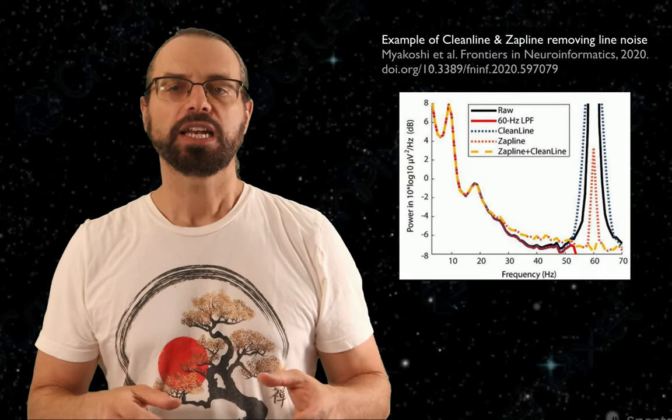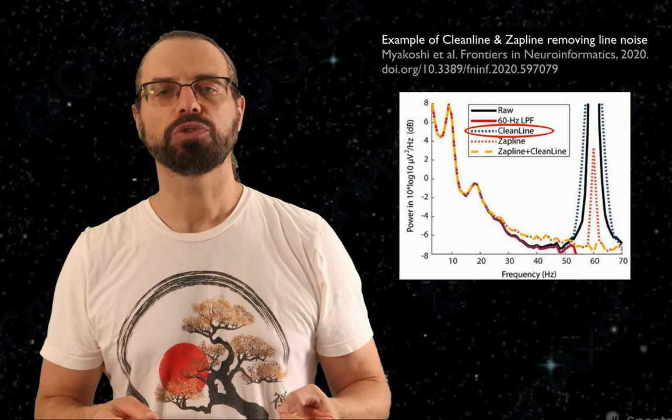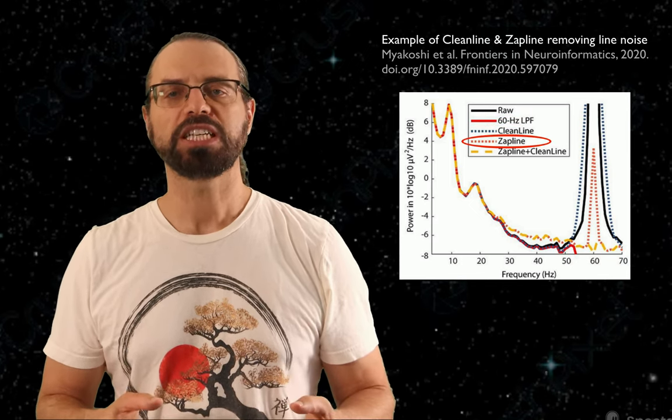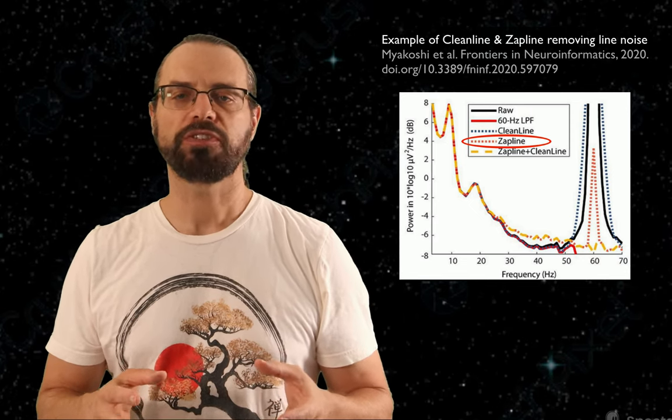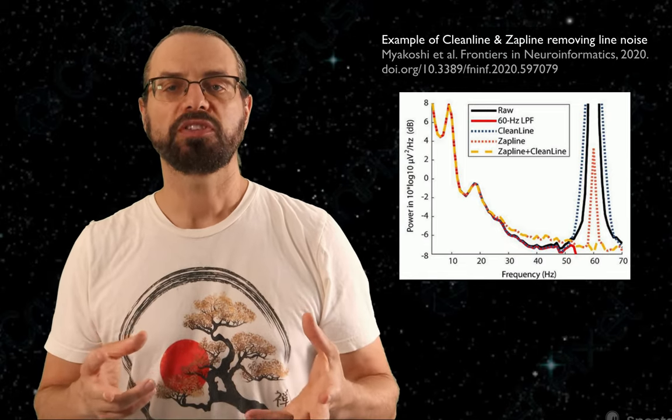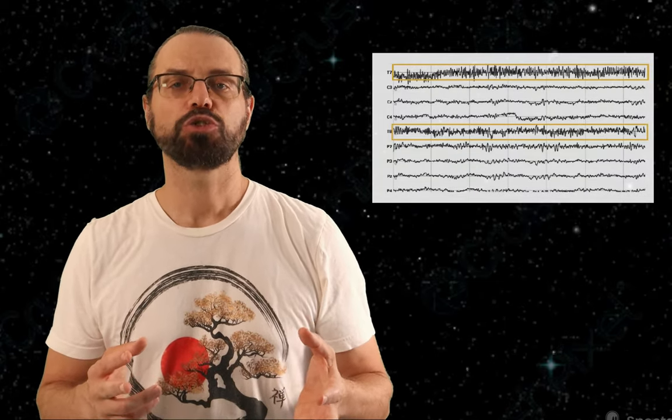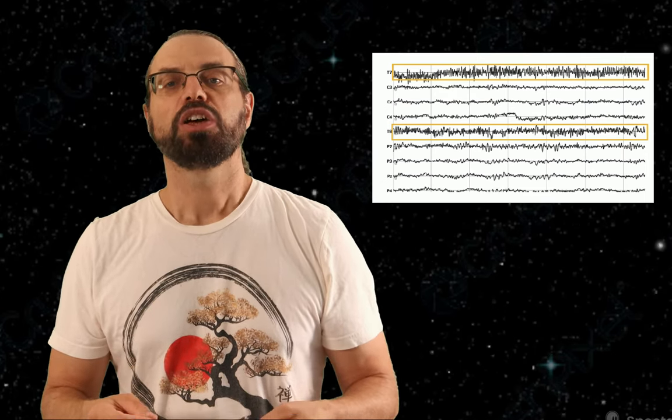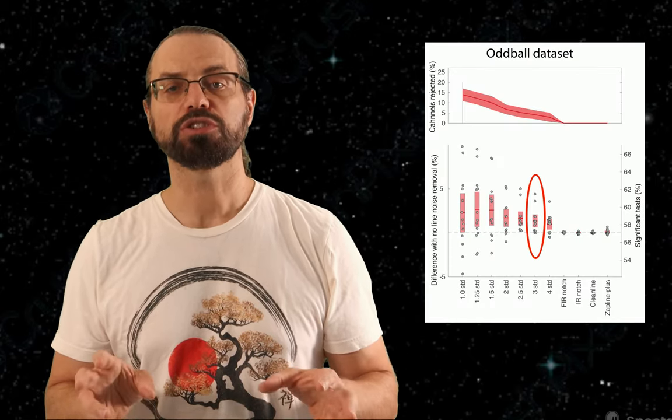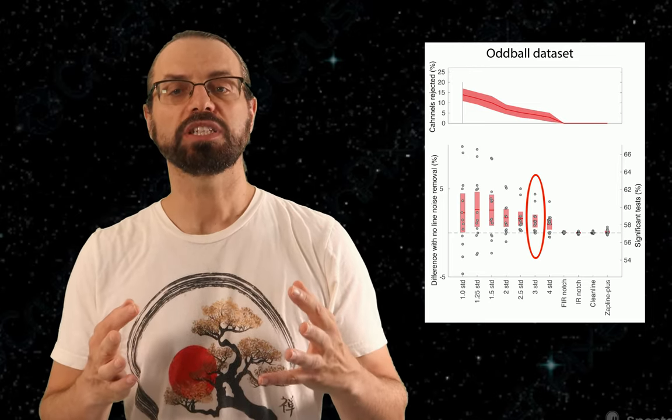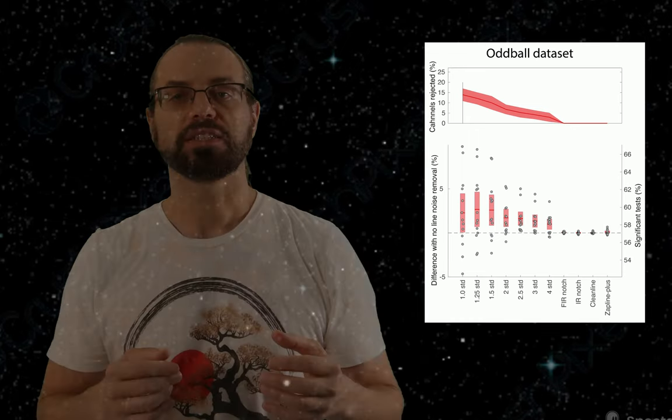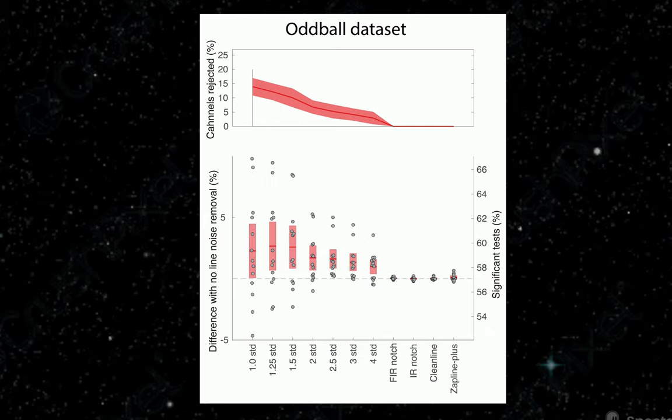Then we tried line-noise removal. We tried different methods. The CleanLine EEGLAB plugin, which estimates and removes sinusoidal line-noise, and the Zapline Plus EEGLAB plugin, which combines spectral and spatial filtering to remove line-noise. Neither of these helped. What helped, however, was to reject channels that contain too much line-noise. For example, rejecting all channels with more than 3 standard deviations in the line-noise frequency significantly increased the significance for the face and oddball datasets. However, it wasn't by much. So the take-home message here is not to be obsessed with line-noise removal techniques, unless you have a specific reason for that.